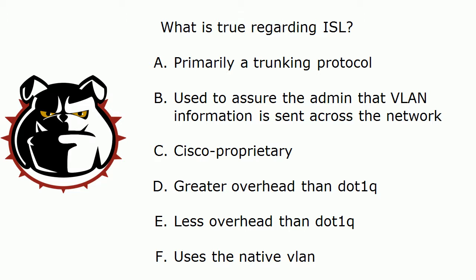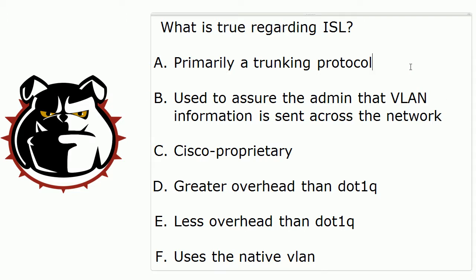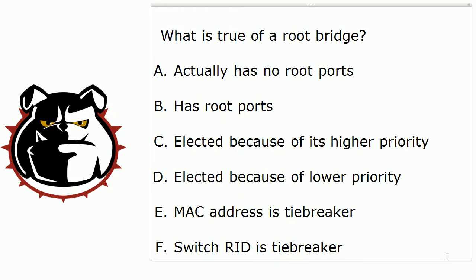Instead, ISL is going to encapsulate every single frame that it's going to send across the trunk, and that includes frames destined for the native VLAN. So our correct answers are: it's primarily a trunking protocol, it is Cisco proprietary, and it has greater overhead than .1Q.